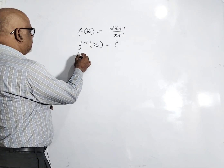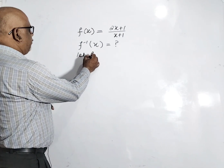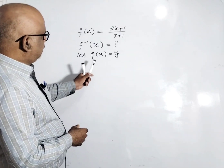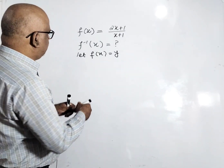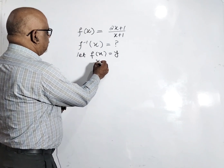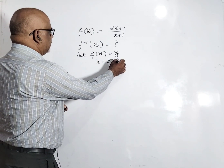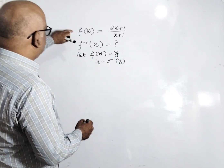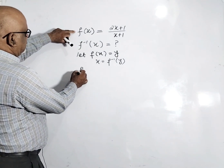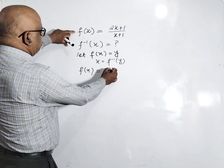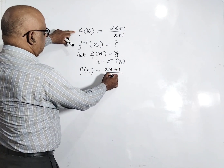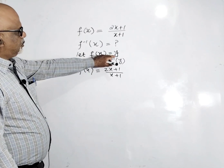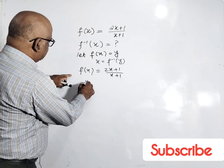Let's suppose that f(x) equals y. So the value of x here: x equals f inverse of y. Now come to the question — f(x) equals 2x plus 1 divided by x plus 1. Since we supposed f(x) equals y, we write 2x plus 1 divided by x plus 1 equals y.